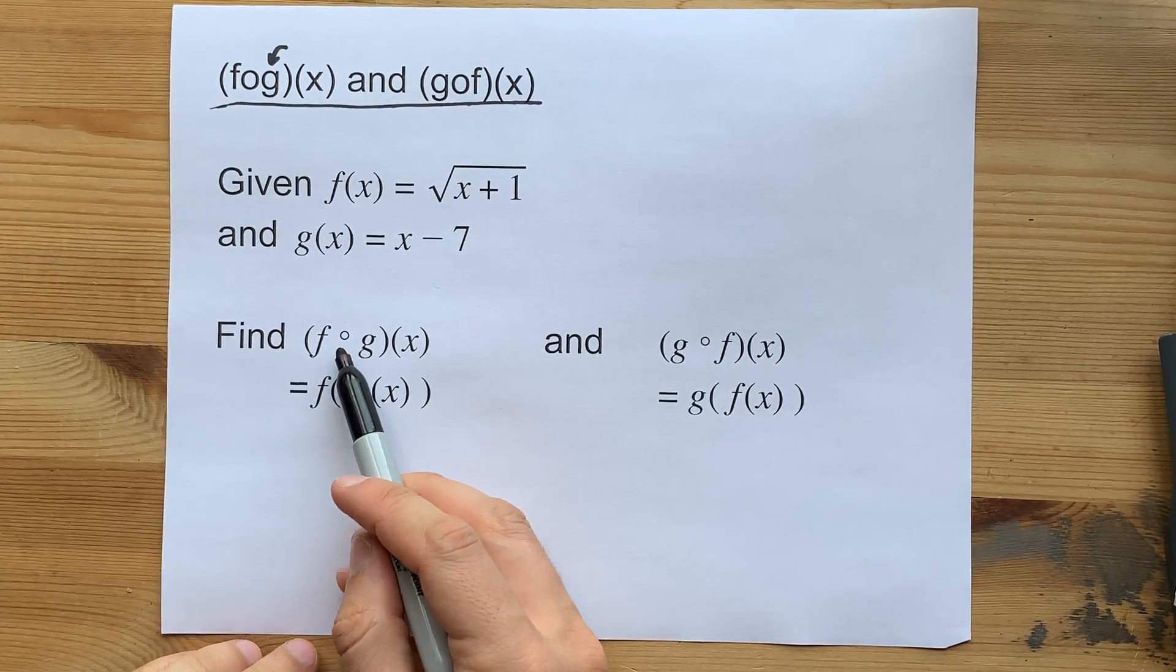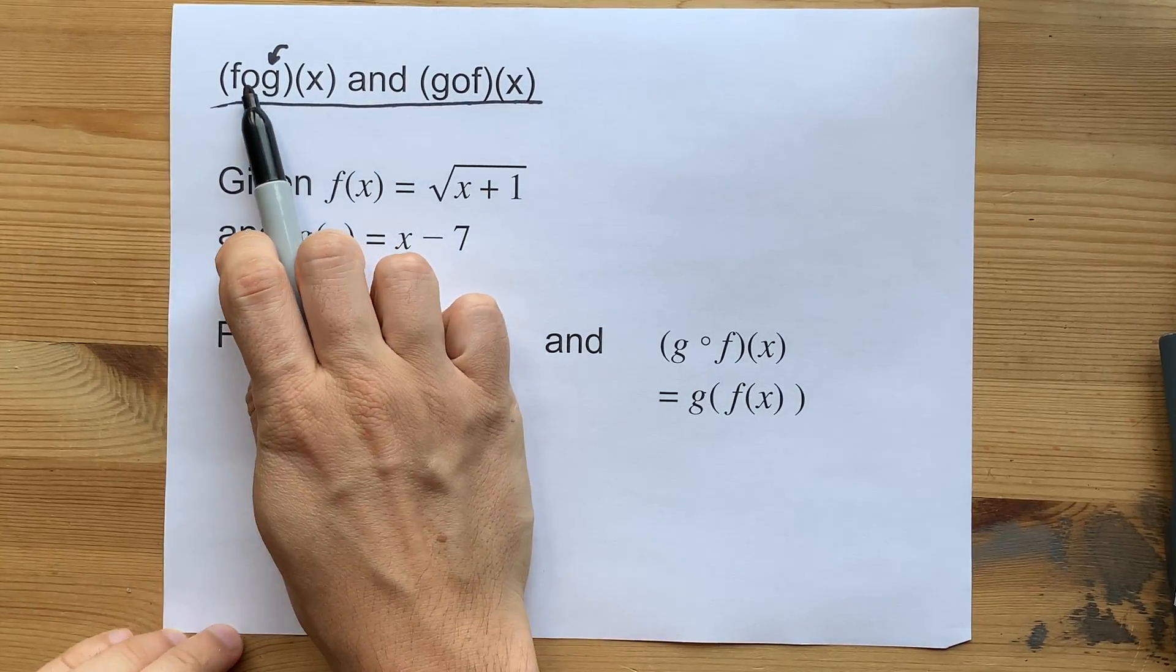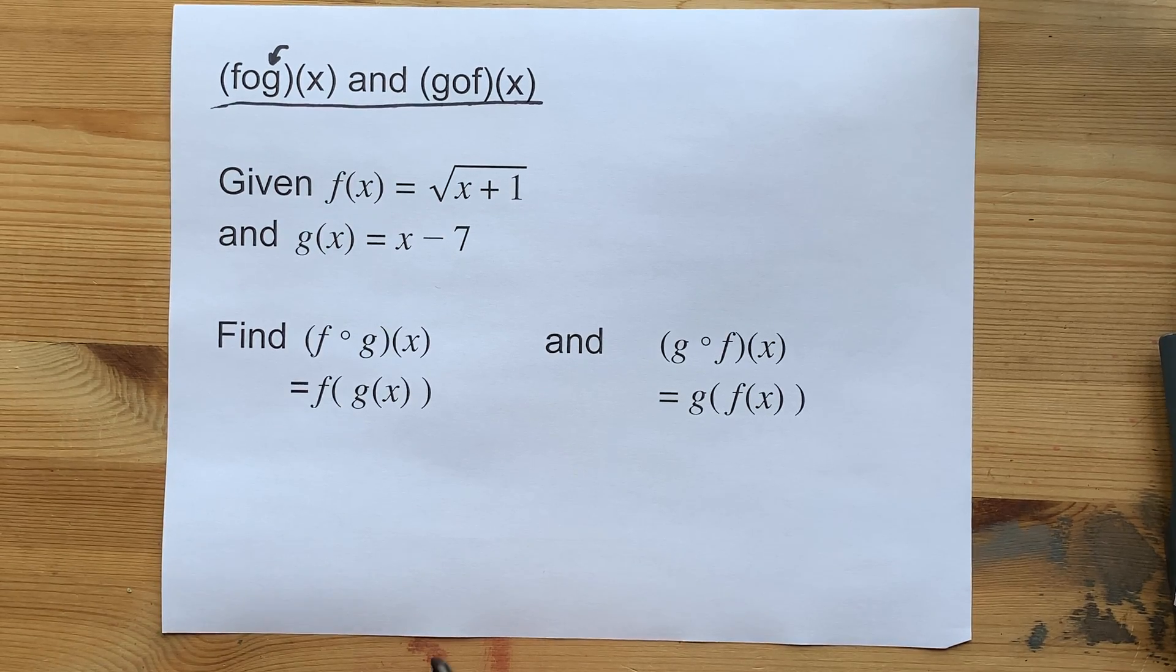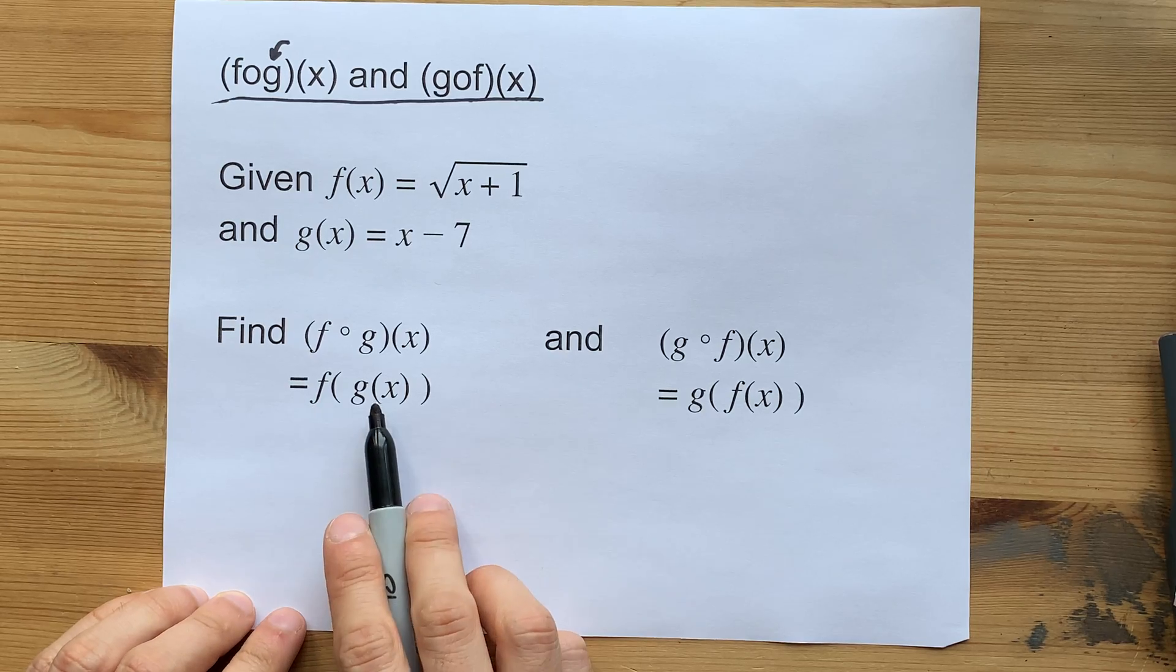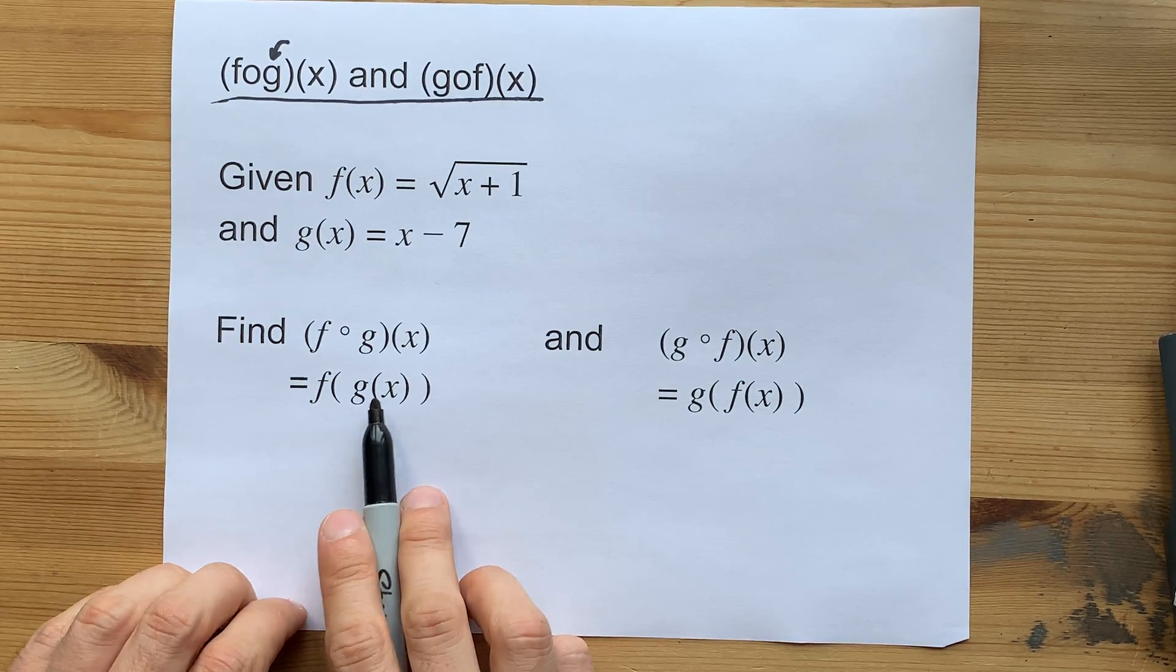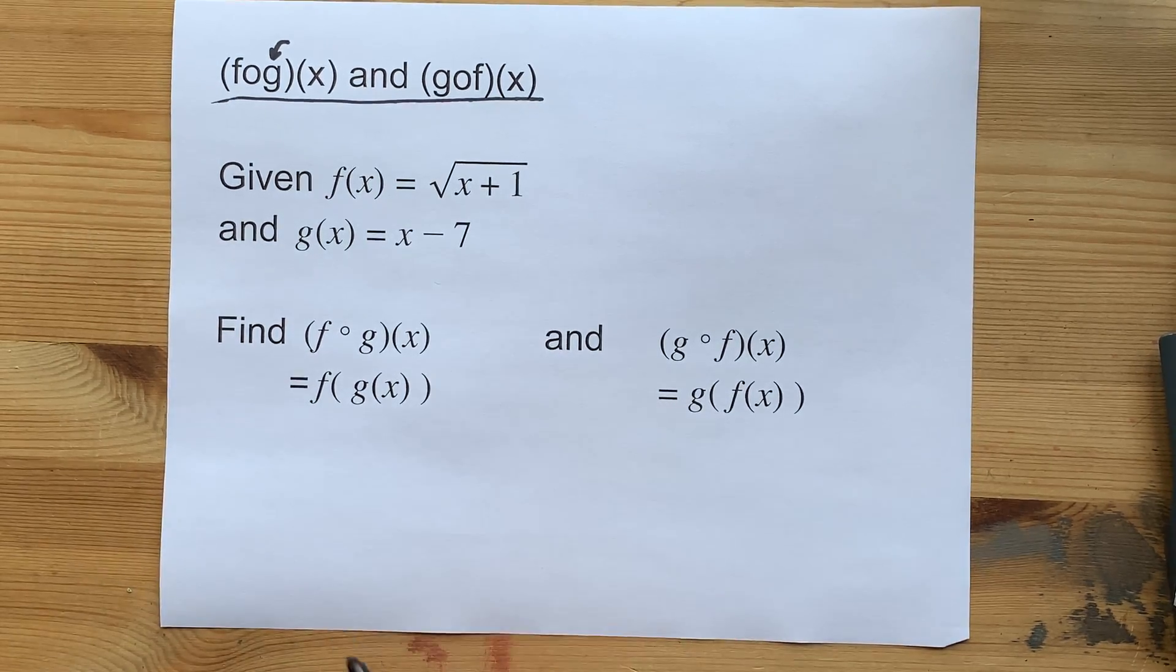This is how that should be written. I'm guessing you typed that to get to this video. f of g of x means that you take f and you jam g of x in everywhere that you see x in f.